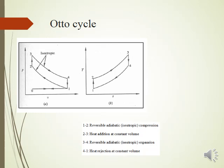The T-S diagram can be drawn for these processes. The isentropic processes 1→2 and 3→4 are shown by vertical lines. The constant-volume processes are shown by inclined curves on the T-S diagram having a positive slope with the x-axis.